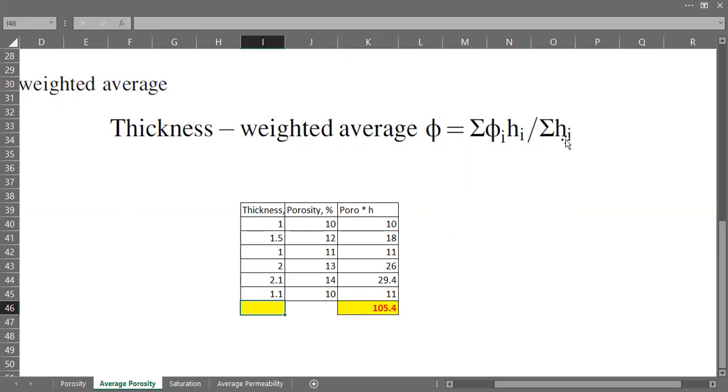The summation of all the thicknesses is just the sum of the thickness. It's very easy. Now we can calculate the thickness-weighted average porosity.